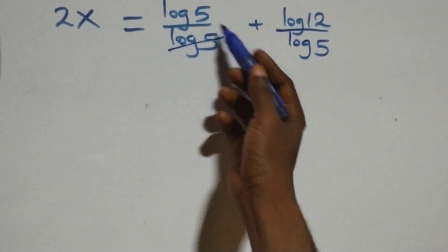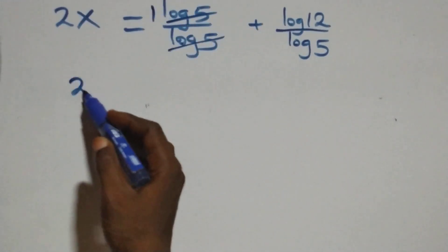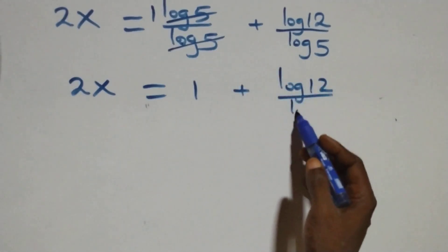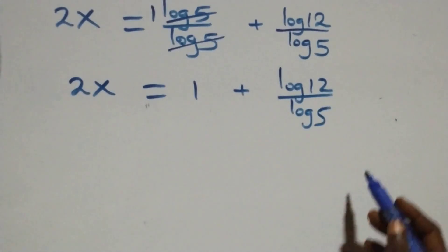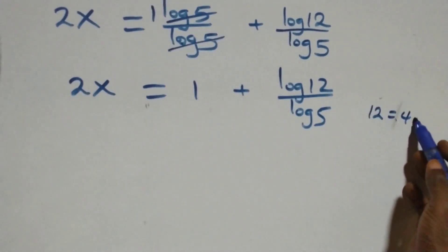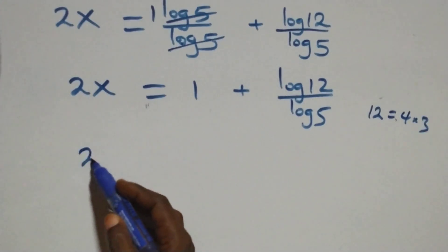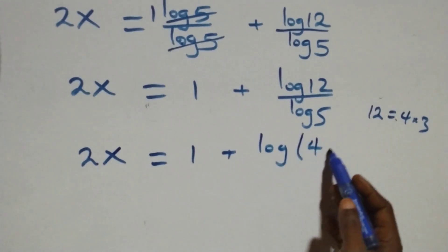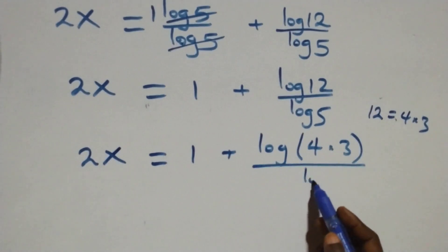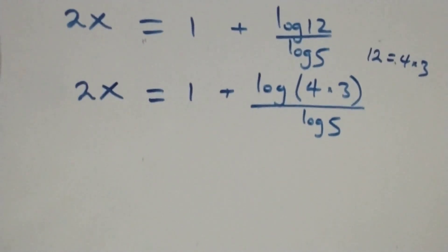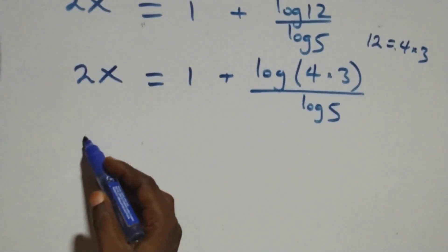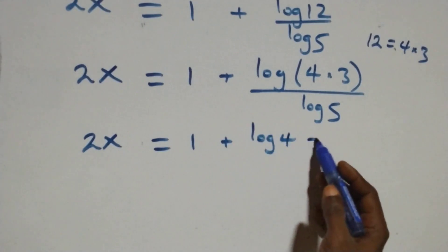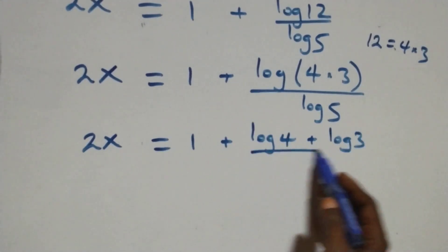Log five over log five cancels to one, giving two x equals one plus log twelve over log five. We can then write twelve as four times three, so two x equals one plus log of four times three, over log five. By the product rule of logarithms, this becomes two x equals one plus log four plus log three, over log five.